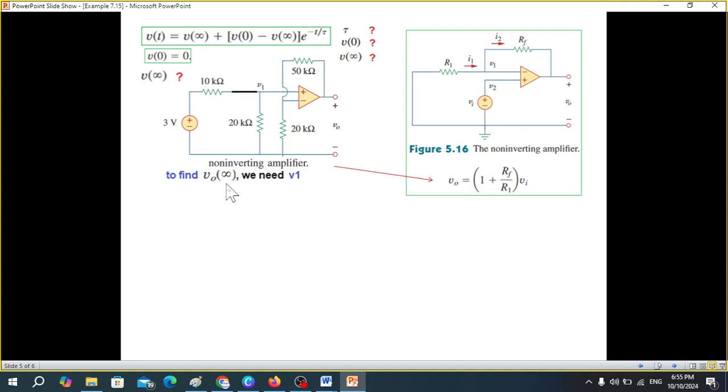But to find Vout infinity, we need V1 from here, so we need to find what is V1 and V1 we have to calculate from this circuit. So we calculate V1 by the voltage divider rule. V1 is total voltage, 3, divided by total resistance and multiplied by 20k, so V1 is 2 volt.